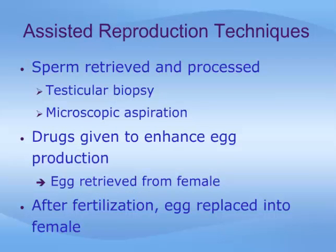In assisted reproduction techniques, sperm is retrieved from the male partner, usually by microscopic aspiration or biopsy of the testicle. It is then processed in the lab. Drugs are given to the female partner to enhance egg production. Then, at the right time, eggs are retrieved from her. Fertilization is then accomplished, depending on the technique, as discussed in the next slide.